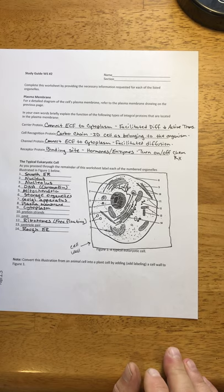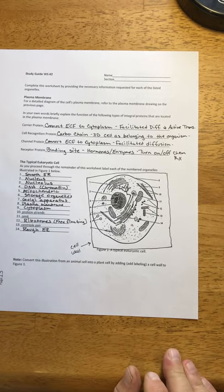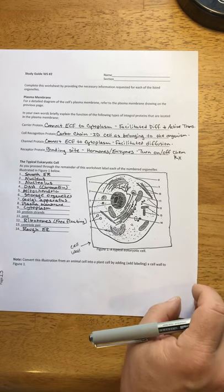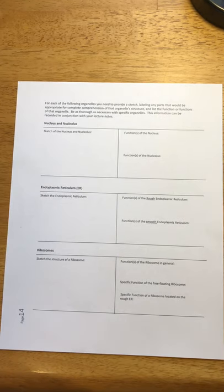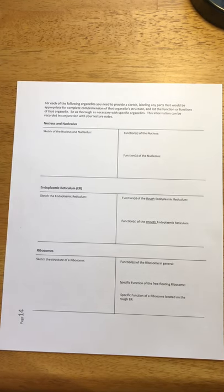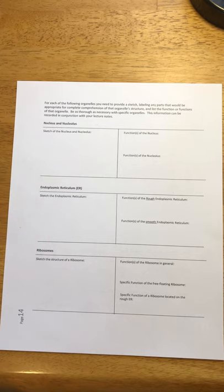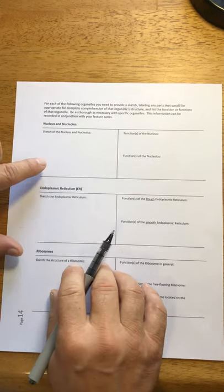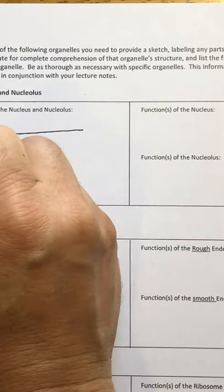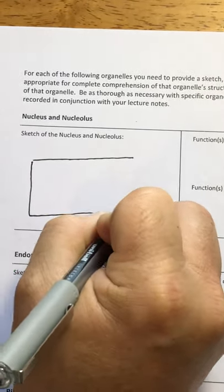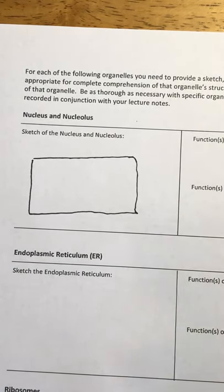That sets the stage for where we're going with the rest of this section, which is a summary of the major organelles of eukaryotic cells. That takes us to the second page, which is almost like a table that lists some of the major organelles of the eukaryotic cell. We'll start with the defining organelle — the nucleus — and also add the nucleolus. We're going to draw a whole bunch of these and continuously add the organelles and describe their functions as we go.